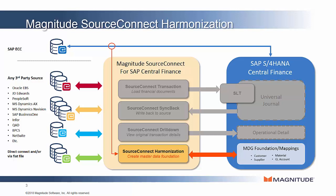SourceConnect Harmonization can quickly extract the raw data from source systems including SAP ECC, other systems, or even flat files, process it through a machine learning harmonization engine, and then load the resulting harmonized output into Central Finance. Let's look at this process in a little more depth.